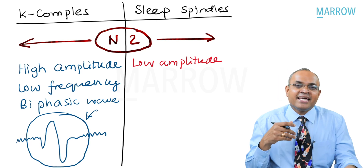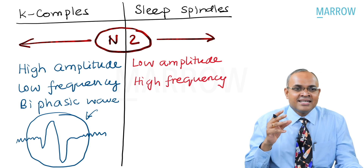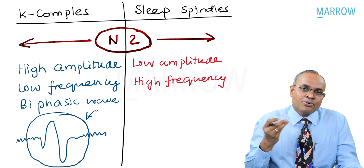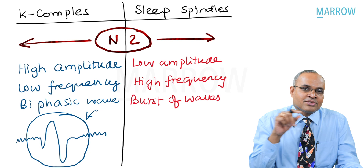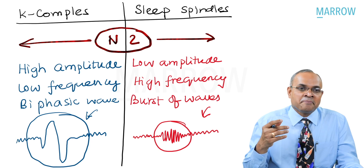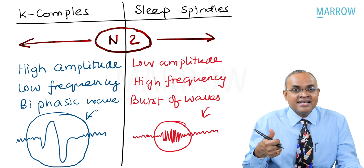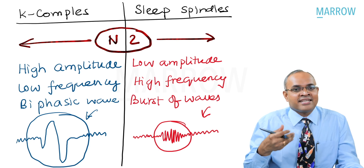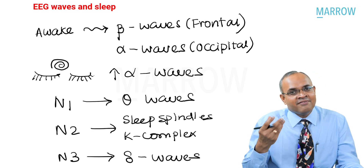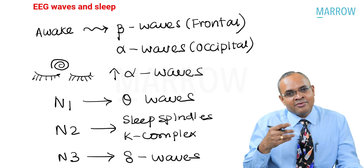Sleep spindles are low-voltage, high-frequency bursts at 12 to 14 Hz, in the alpha wave range. The moment you see a K complex or a sleep spindle on the EEG, you understand the patient is mostly in N2 stage of sleep. In N3 stage of sleep, you see theta waves. In REM, the patient has sawtooth appearance of waves. These are important points which can be tested in exams.